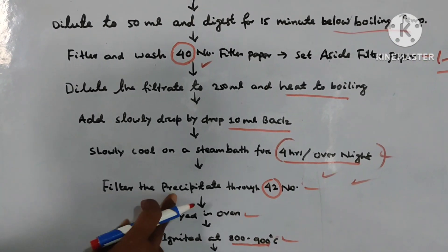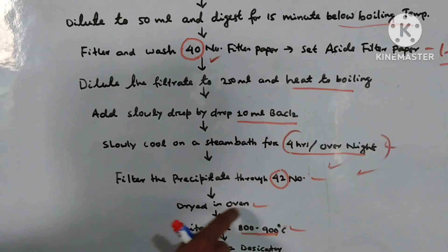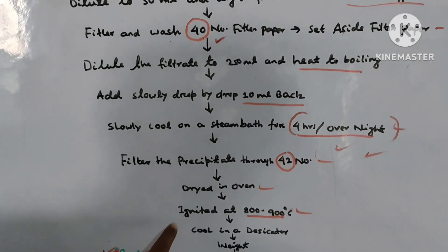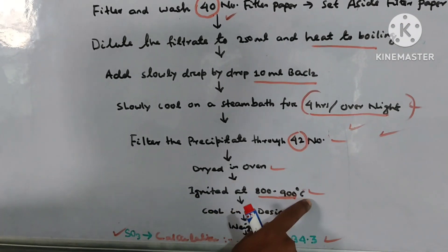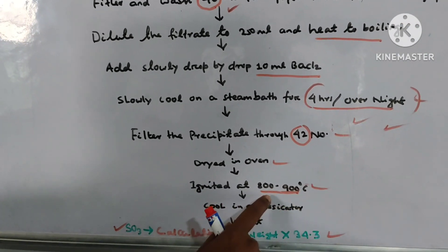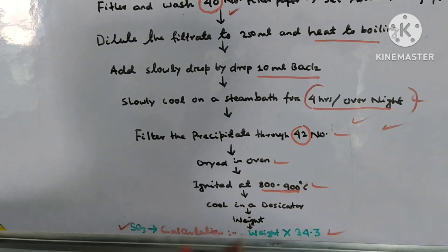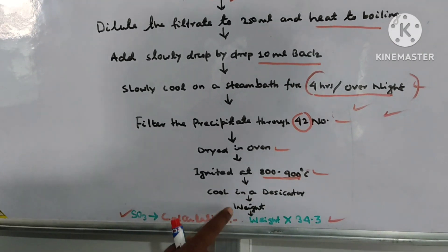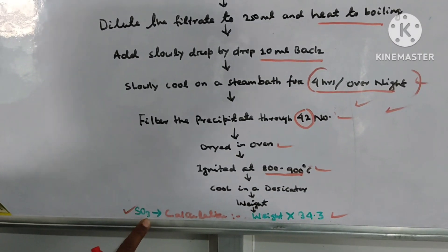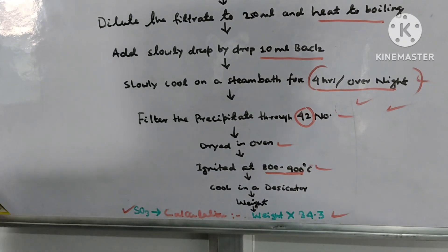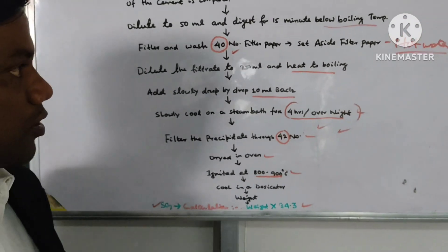Filter the precipitate through No. 42 filter paper. Dry it in the oven. Ignite at 800 to 900 degrees centigrade. Cool in a desiccator, then weigh. For the sulfur trioxide calculation: weight multiplied by 34.3 gives the SO₃ percentage.